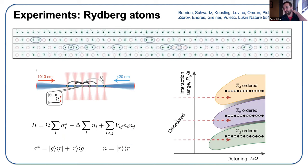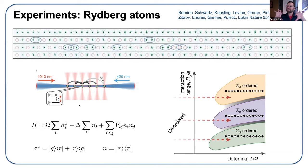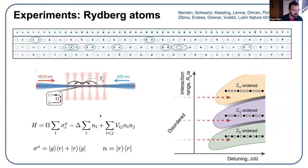The first experiment we worked on was built by Manuel Andrei during his postdoc in Misha Lukin's lab at Harvard — essentially a Rydberg atom Hamiltonian. Rydberg atoms are loaded in a lattice; they exist in a ground state or a highly excited Rydberg state, and those Rydberg states have some repulsion based on lattice spacing — the Rydberg blockade. This blockade can give you all sorts of interesting phases. There's an interesting paper by Subir Sachdev about the transition to the Z3 phase.